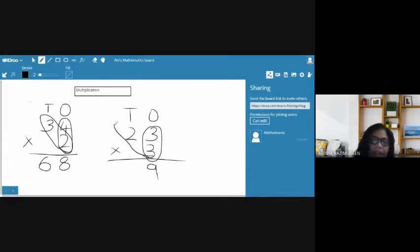Then, 3-2s are? 6. 6. So, our answer is 69. This is the way we have to do the multiplication. 2-digit number with 1 digit. It is very easy, right? Yeah.